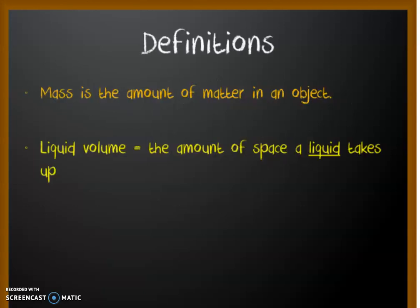To review those terms, mass is the amount of matter in an object, and liquid volume is the amount of space that a liquid takes up.